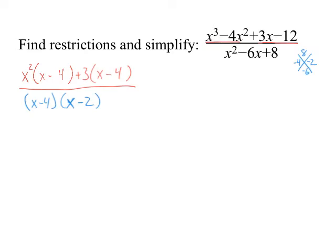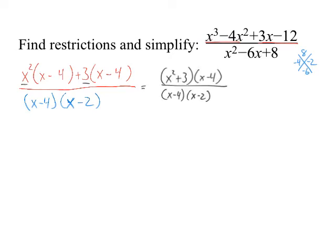Usually when you factor, something's going to cancel. I see the x minus 4s, but the top isn't done yet — don't start canceling. Since both pieces of the top have x minus 4, we group them: those two become (x squared plus 3) times (x minus 4). We pulled out the GCF of x minus 4, leaving x squared plus 3. The x minus 4s cancel, leaving the simplified function: (x squared plus 3) on top and (x minus 2) on the bottom.